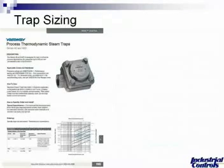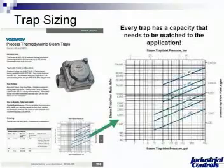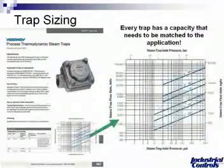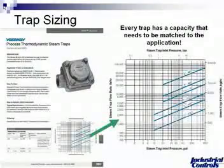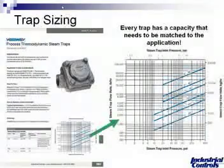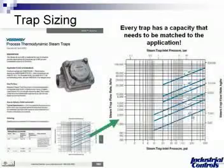This is another page out of our catalog showing a process thermodynamic steam trap produced by Yarway. We show you how to size and select — every trap has a capacity that needs to be matched to its application. As an example, if you look where the arrow is pointing on the left-hand side, a steam trap flow rate of 2,000 pounds per hour — moving across to an inlet steam pressure of 200 psi, the intersecting selection would be a half-inch 40D model steam trap produced by Yarway. This is on every page in our catalog, and we can also assist you with sizing and selection if you contact Industrial Controls.